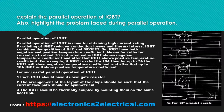For successful parallel operation of IGBT: 1. Each IGBT should have its own gate resistor. 2. The arrangement of the layout of the chips should be such that the current flow path should be symmetrical. 3. The IGBTs should be thermally coupled by mounting them on the same heat sink.